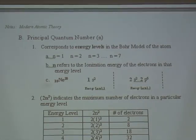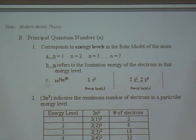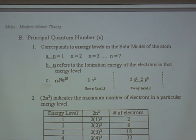So again, the principal quantum number N corresponds to the energy levels. N also refers to the ionization energy of the electrons in that energy level. Ionization energy is simply the energy needed to ionize an atom — in particular, to remove an electron. We'll talk more about that in the periodic table unit, which is next.